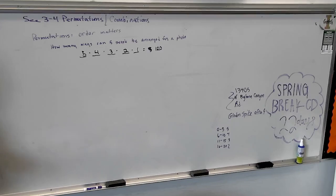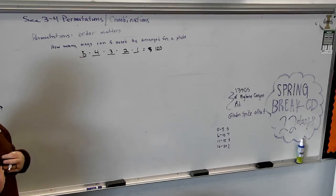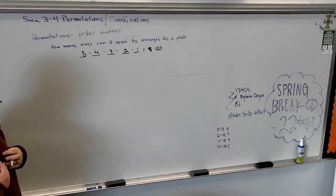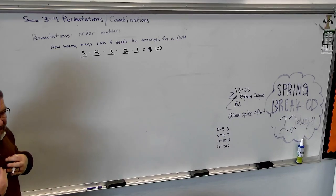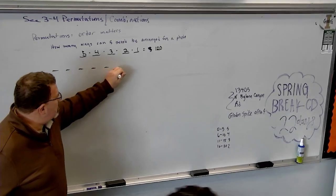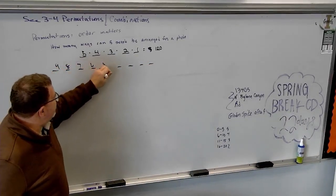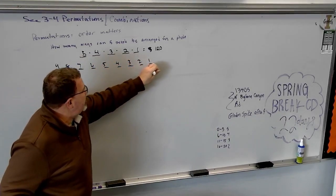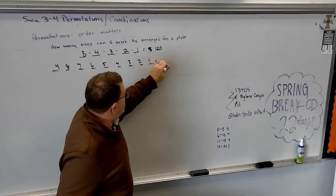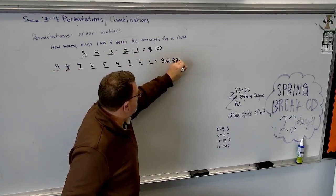On your calculator, you would just go five times four times three times two times one, which is 120. There are 120 different ways I could arrange five people in a photograph. What if I asked you this: I'm a baseball coach and I have nine people on a team. How many different ways can I come up with a batting lineup? Nine, eight, seven, six, five, four, three, two, one. What did you get, Damien? 362,880.